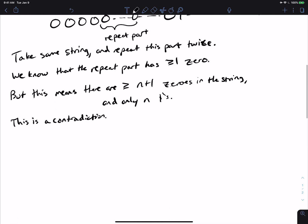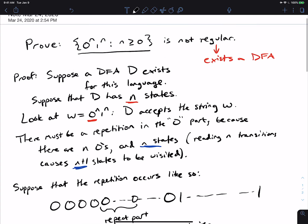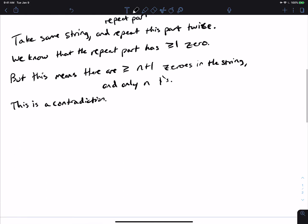So, therefore, the string that we must accept at this point is not in the language that we suppose the DFA had. So, this is a contradiction and so, therefore, the DFA D cannot exist for this language.